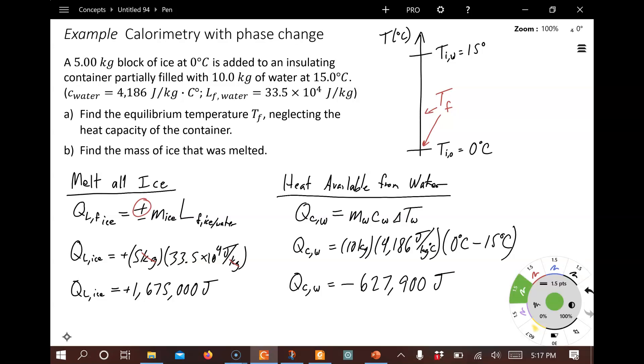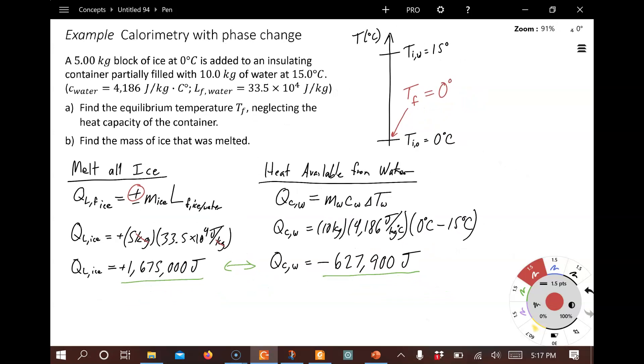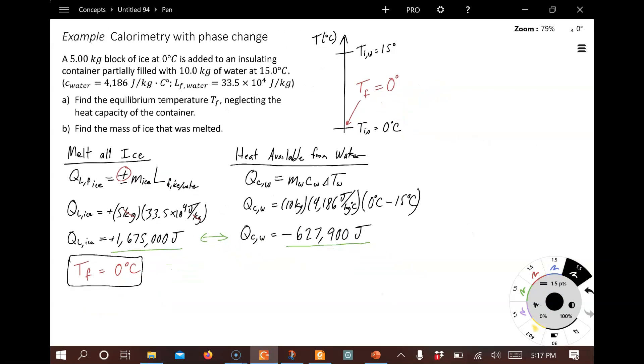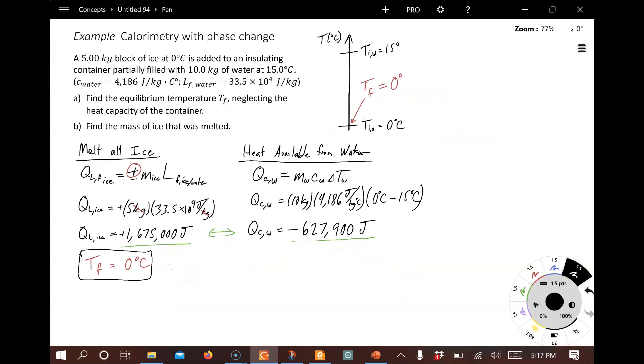Now if we compare these two, we see that we don't have enough. This is too small to melt all the ice. It would take more heat energy from the water to melt all the ice. So in that case, we know for sure that we're not going to be able to melt all the ice. In fact, the final equilibrium temperature, it is going to be zero, and there's going to be some ice remaining. So for part A, we come up with T final equals zero degrees Celsius because there's not enough heat in the water to melt all of the ice.